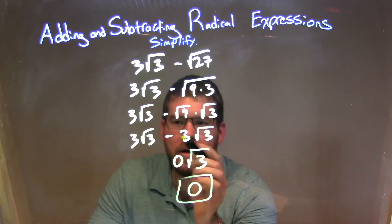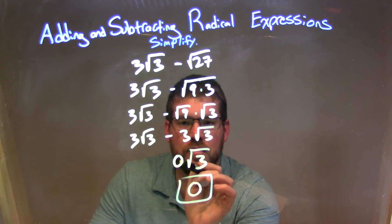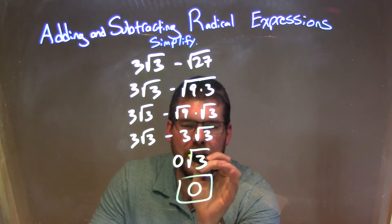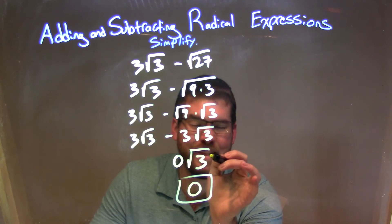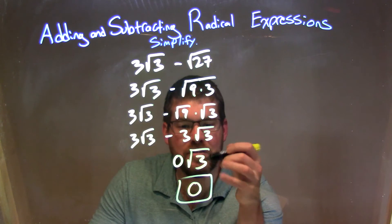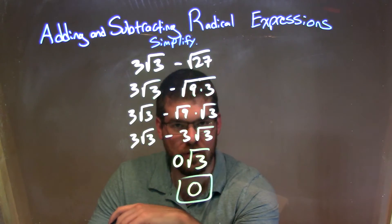We look at the numbers out front. What's subtracting? 3 minus 3 is just 0. We bring down the square root of 3. But now here's the issue. 0 times anything is just 0. So that gives us our final answer here of just 0.